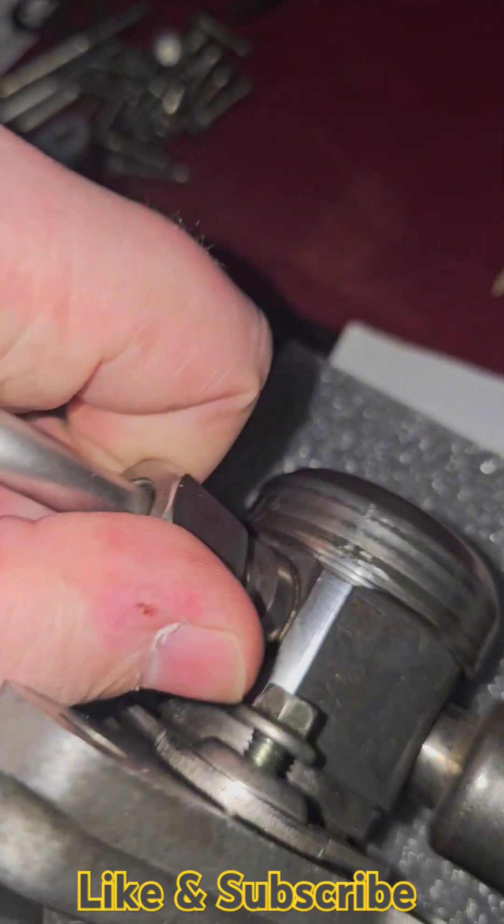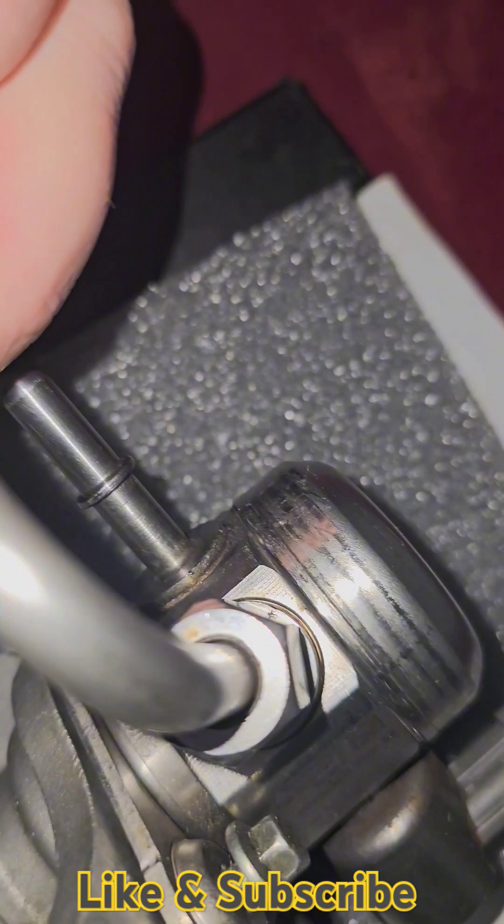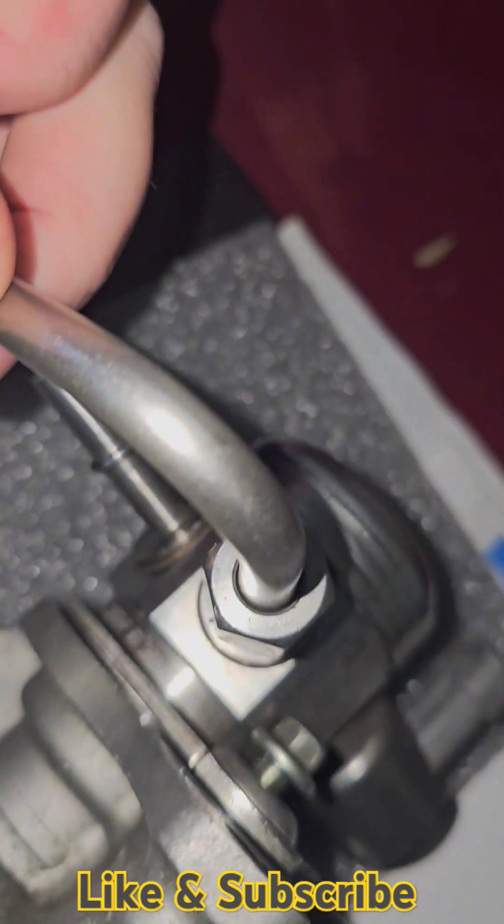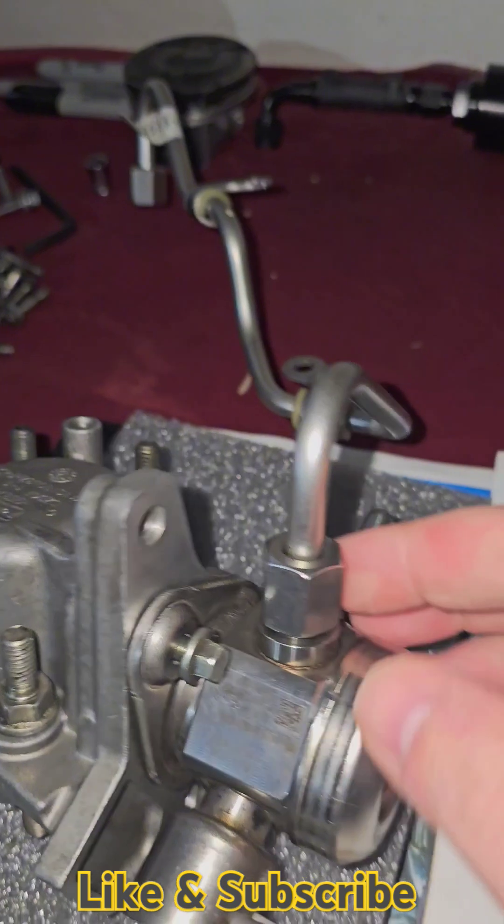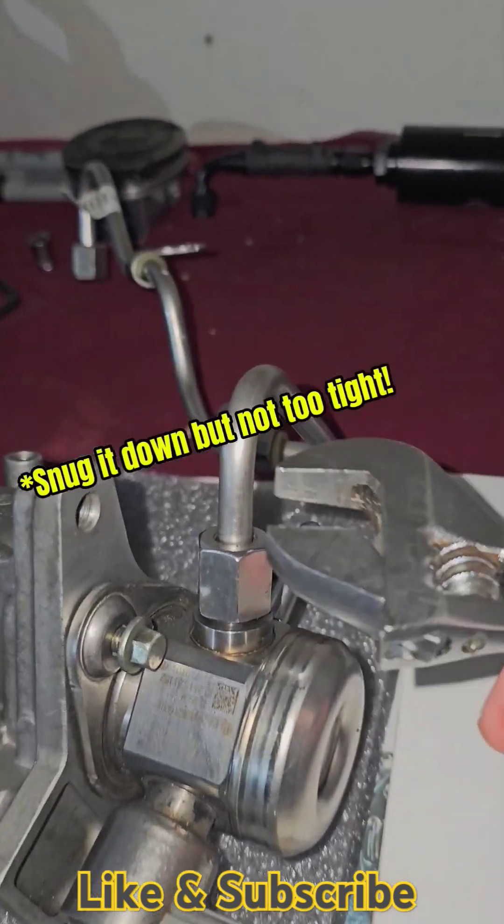You just start threading it. You want it to look just like that on the connection, evenly spaced. So I make sure I connect both the fuel rail and the high-pressure fuel pump in before I actually tighten these down.